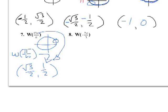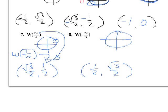For W(-2π/3), the denominator is 3, so we start with (1/2, √3/2). Since it's negative, we go clockwise, traveling 2/3 of the way, which puts us in the third quadrant. So the answer is (-1/2, -√3/2). Wrapping functions aren't terribly difficult: first figure out what the coordinates look like from the denominator, then determine the signs based on where on the unit circle the angle falls.